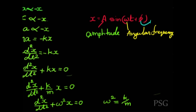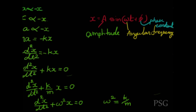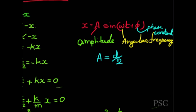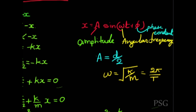The term φ is the phase constant, whose value is determined by the initial conditions of that oscillation. If d is the distance between the two extreme points of the oscillator, then amplitude A = d/2. Also, ω = √(k/m), and by definition ω = 2π/T, where T is the time period of oscillation.